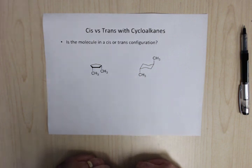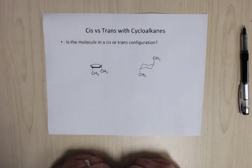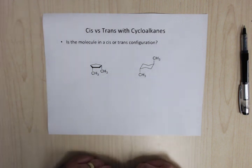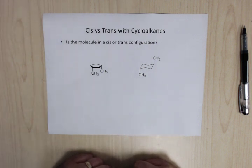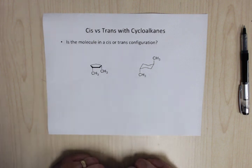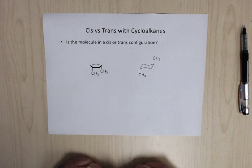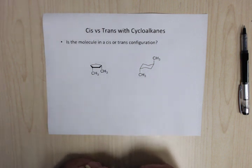Hello, this is the Exam 3 review for Fall 2018 — the free answer part. There are going to be eight or nine multiple choice questions on the exam. These are going to cover things like chair flips, axial/equatorial, understanding how to identify enantiomers, diastereomers, and things like that.